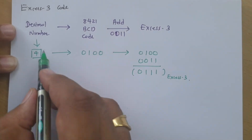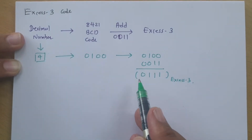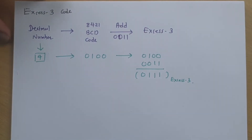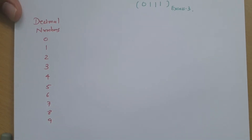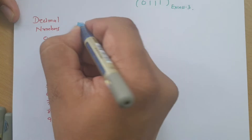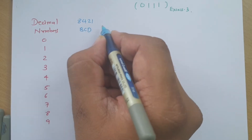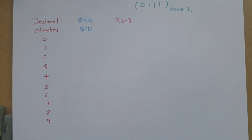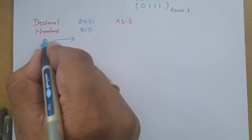We can observe that the decimal number in 8421 BCD is a weighted code, but in Excess-3 it is not a weighted code — it is an unweighted code. This becomes easy to observe once we make a table. We will write down the decimal numbers, their 8421 BCD equivalents, and then by adding 0011 we can derive the Excess-3 code.